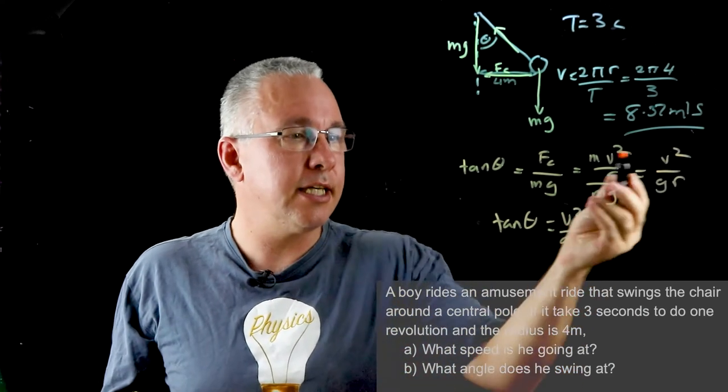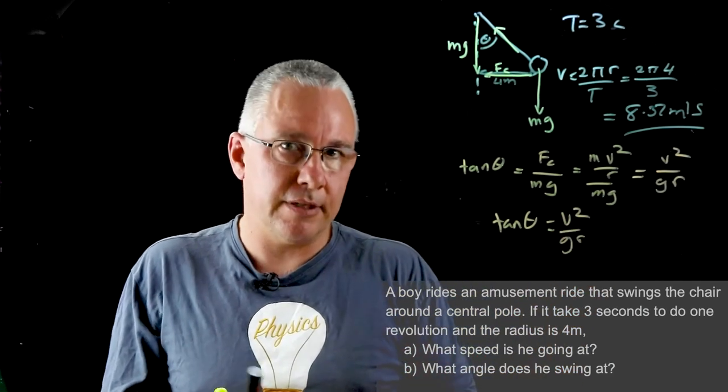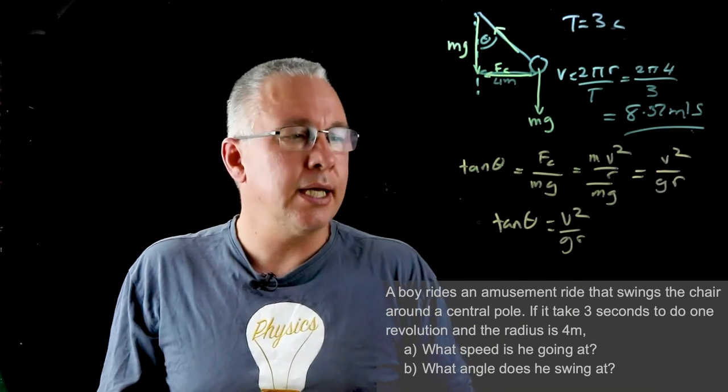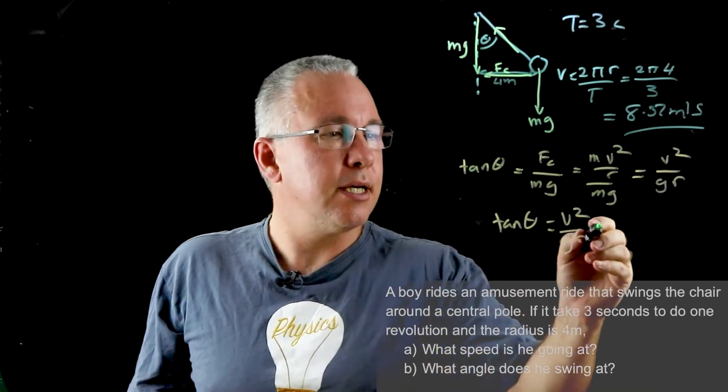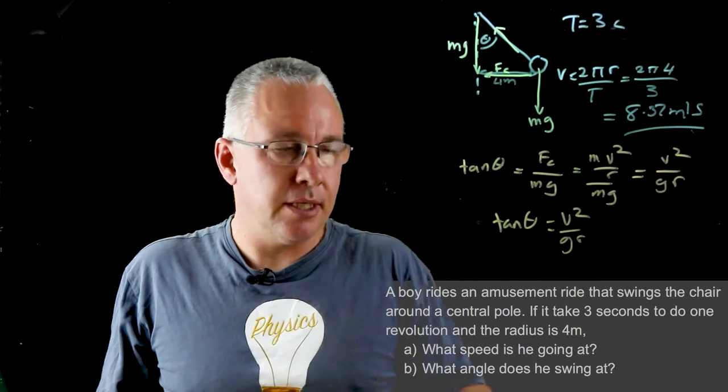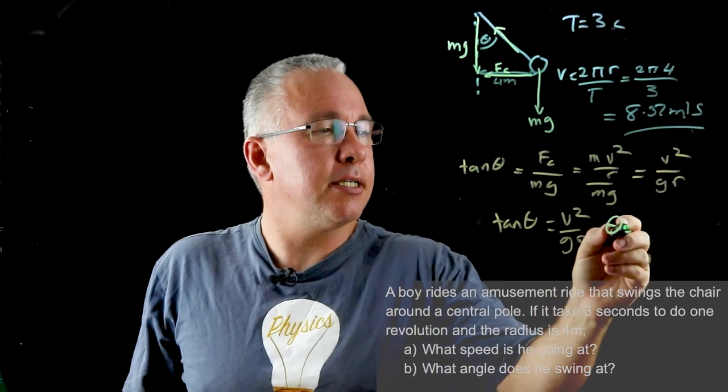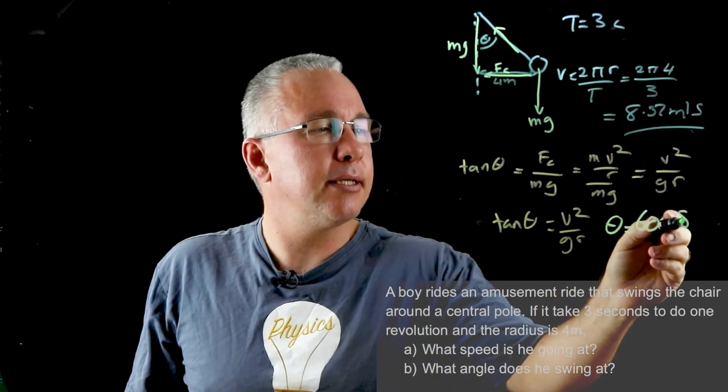Now our v is given, our g is given 9.8 meters per second squared, our r of course is 4 meters. So the angle can now be determined. It's simply θ is equal to 60.8 degrees.